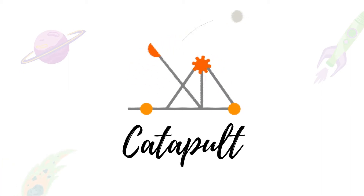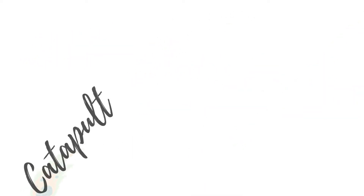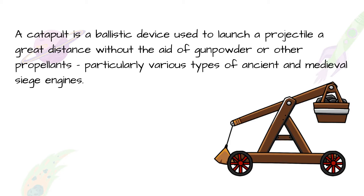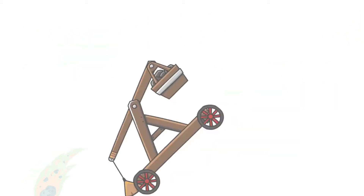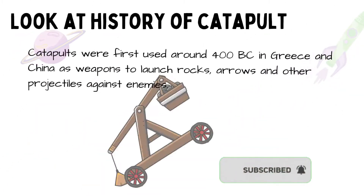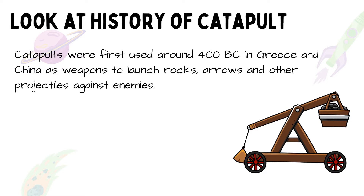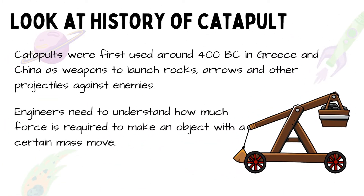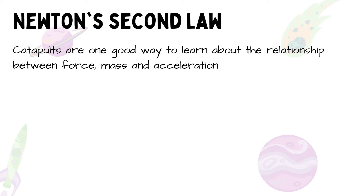Now we will understand the concept behind it. A catapult is a ballistic device used to launch a projectile a great distance without the aid of gunpowder. It uses the sudden release of stored potential energy to propel its payload. Catapults were first used around 400 BC in Greece and China as weapons to launch rocks, arrows, and other projectiles. Over time catapults became too difficult to use, but the fundamental concepts behind them are still used every day. Engineers need to understand how much force is required to make an object with a certain mass move.